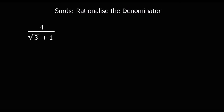This is a harder example. If I try to just times it by root 3 on the bottom, I'll end up with 3 — if I times root 3 by root 3 — but I'd also have to times this by root 3, which will leave it as a surd still, root 3. So I use the difference of two squares — if you remember what that is — to get rid of the surd on the bottom.